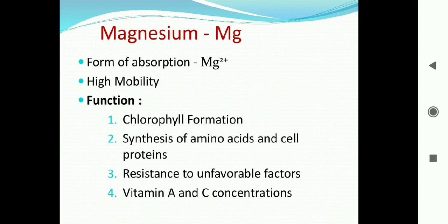Regarding resistance to unfavorable factors: when there are unfavorable conditions in a plant, the presence of magnesium helps resist those conditions. Vitamin A and C concentrations also depend on how much magnesium is present in the plant, so magnesium affects vitamin A and C levels and helps resist unfavorable environmental factors.